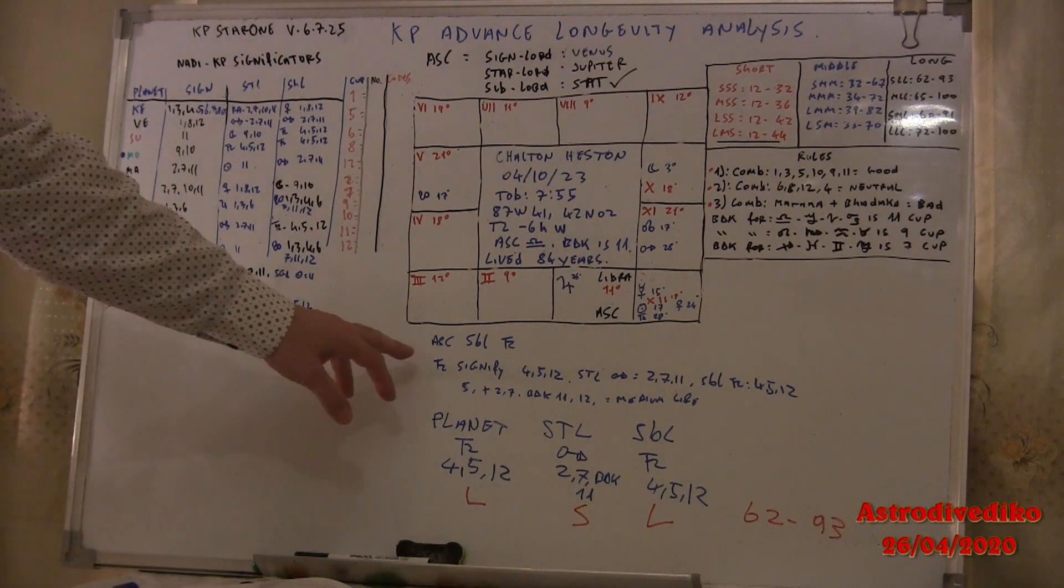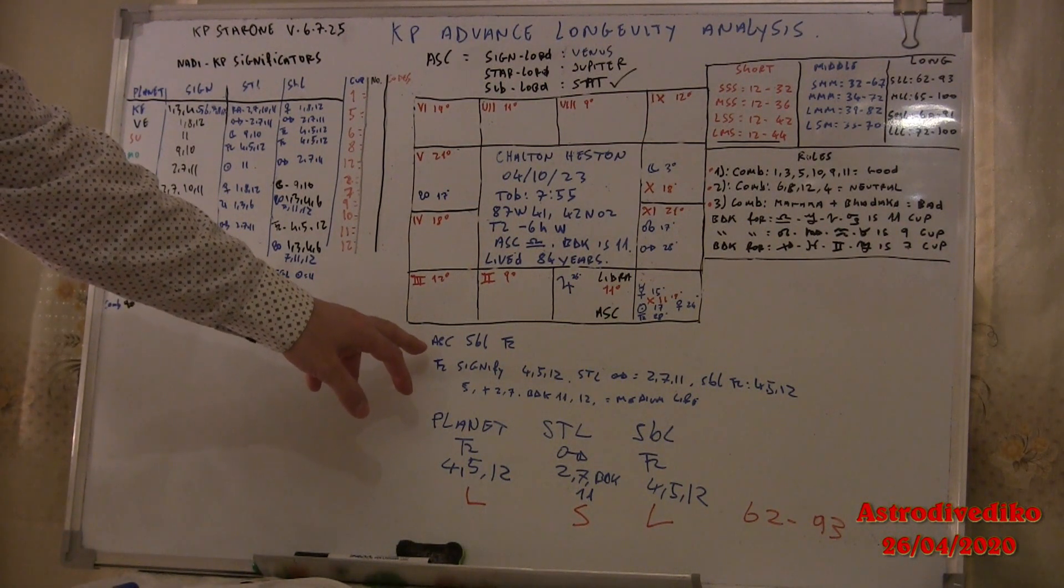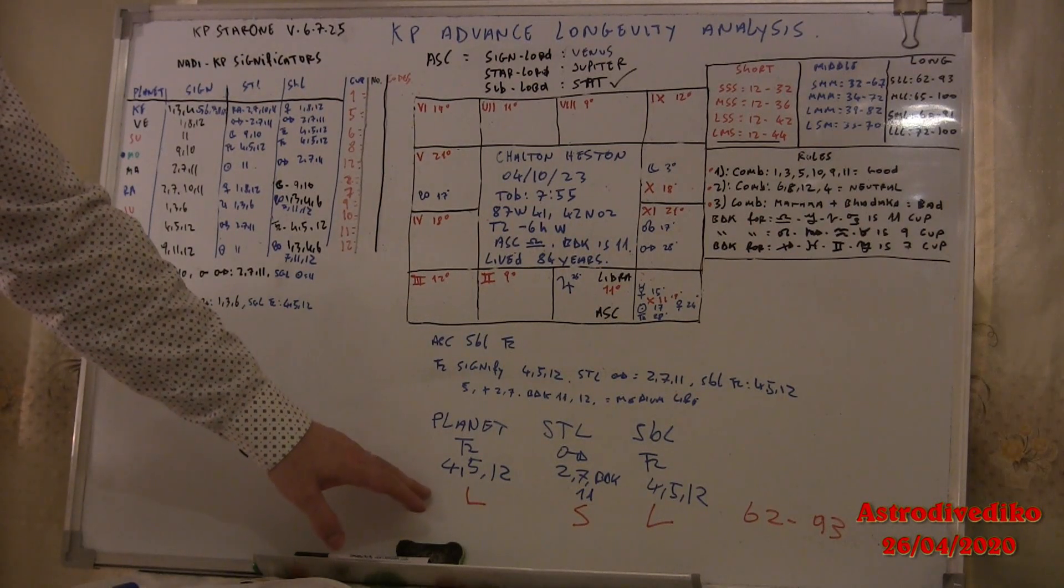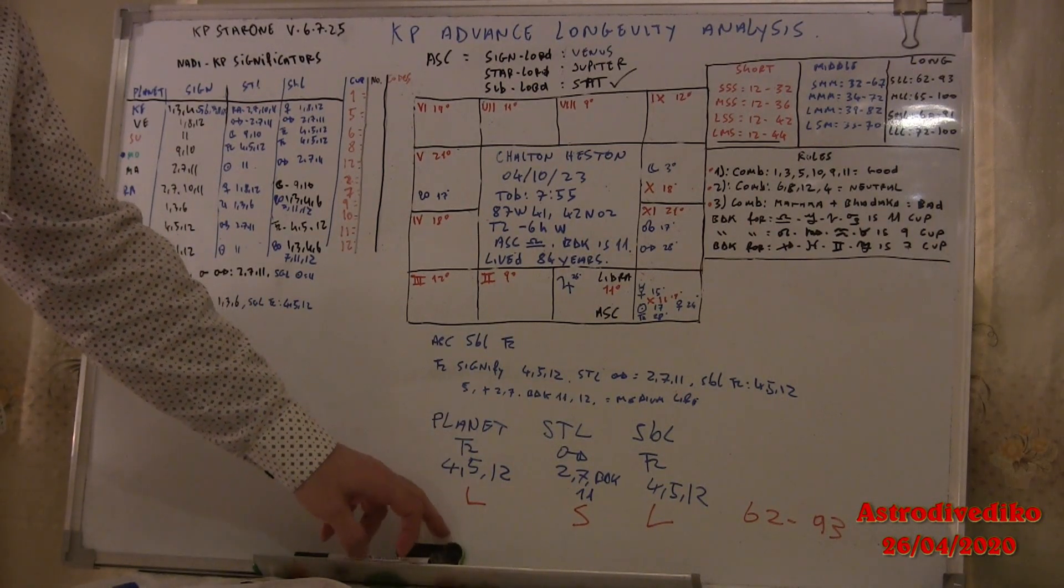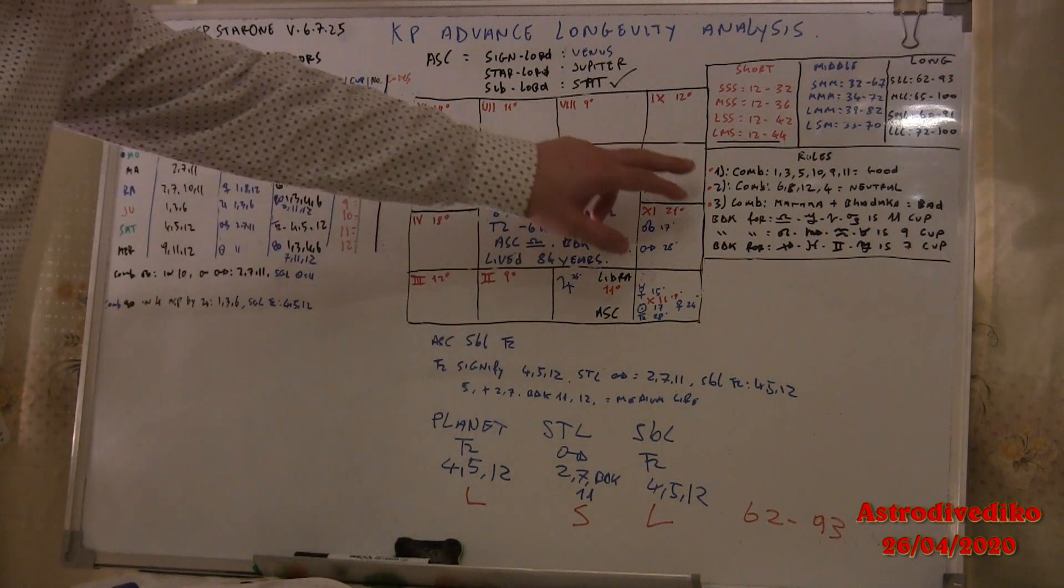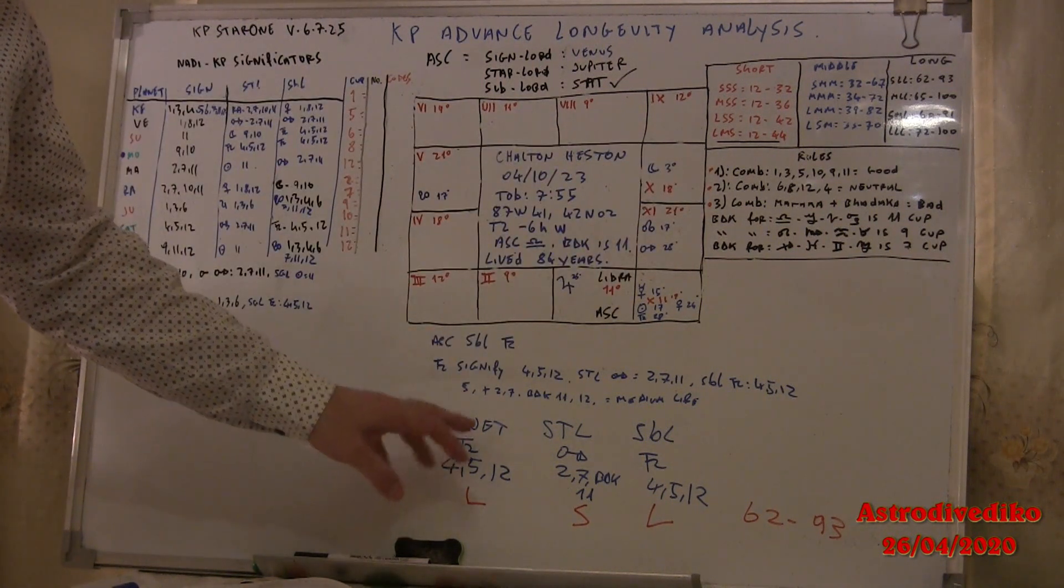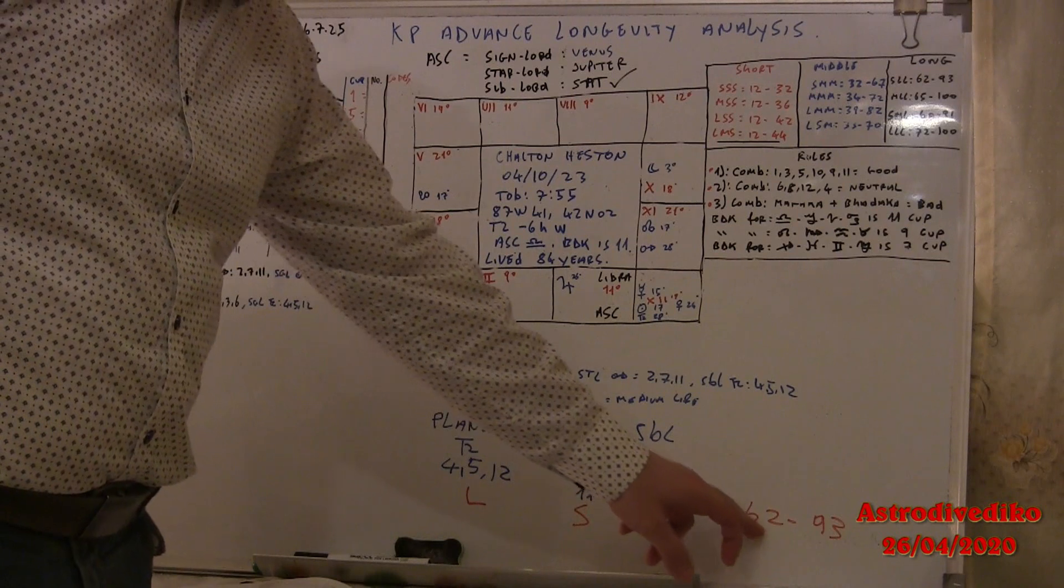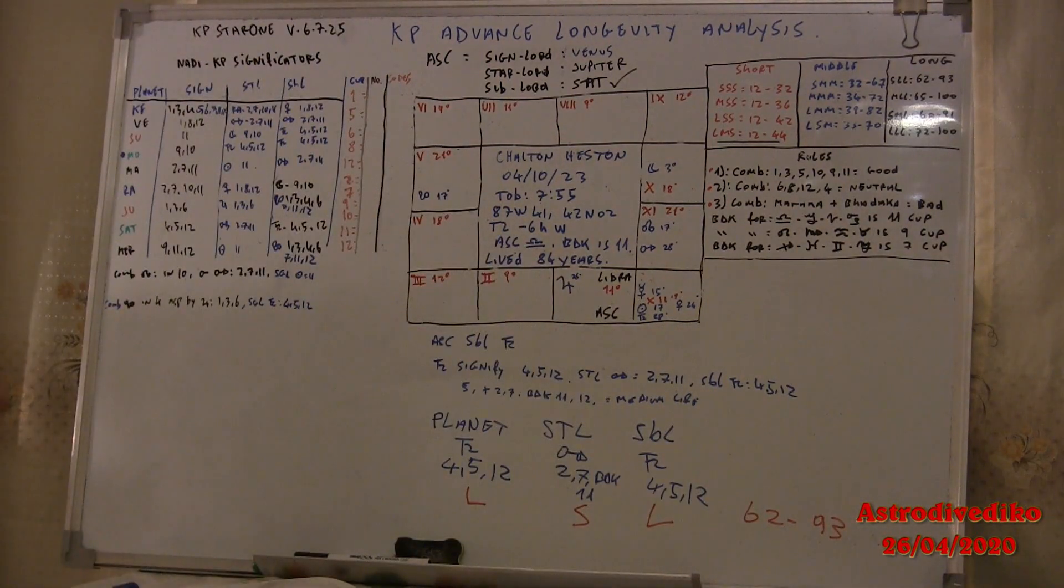So as you see in traditional KP Krishnamurti, it shows the medium life. But if every planet you give a card, every planet you make an analysis with these rules, each planet we have a card combined, we show this card L L L L and it shows a long life. This was my idea, it is an extra rule if you're not sure in longevity in a traditional Krishnamurti Paddhati.